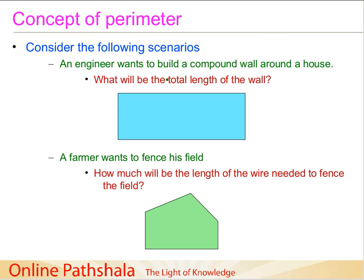So how can he go about measuring the length of the wall? What he is going to do is stand at one corner — let us say we denote that corner as A. Then he would go to the other corner, which we call B, and measure the length of this. Then he goes from this corner to the other corner, which we call C, and measures that length.